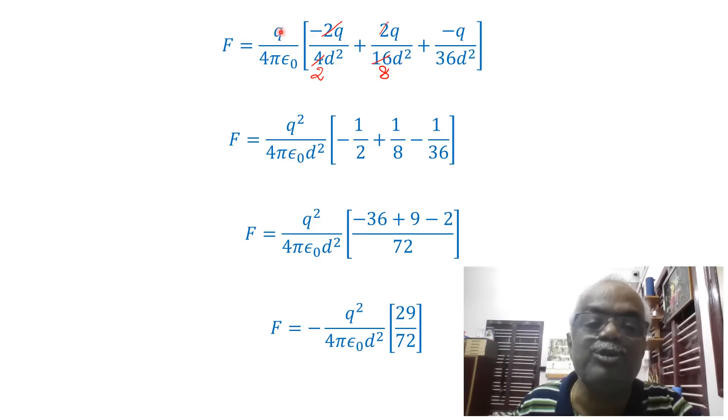So this will cancel with q. I am going to take q as common from the numerator, so this will become q squared. Similarly, I am going to take d squared in the denominator outside, because it's common. So this will become minus 1 by 2, this is plus 1 by 8, here minus 1 over 36.